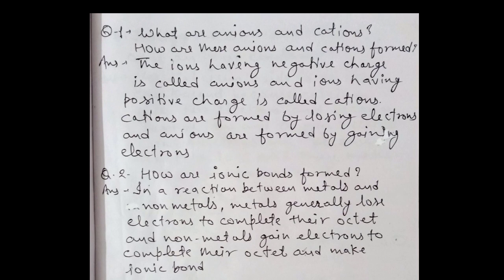Question number 2: How are ionic bonds formed in a reaction between metals and non-metals? Metals generally lose electrons to complete their octet and non-metals gain electrons to complete their octet, and make an ionic bond.